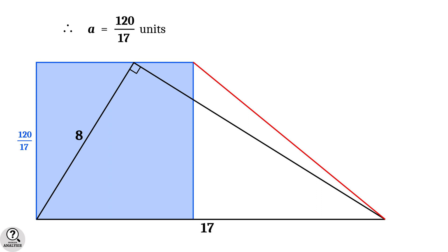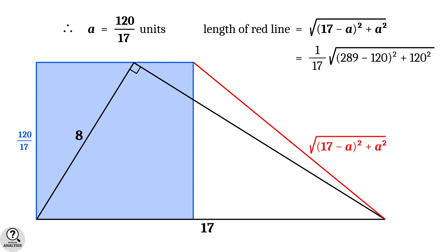And, as we told, the length of the red colored line is equal to square root of (17 minus A) whole square plus A square. Substitute A equal to 120 by 17, to get 1 by 17 into square root of (289 minus 120) whole square plus 120 square.